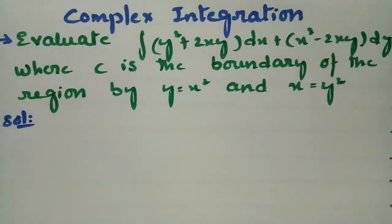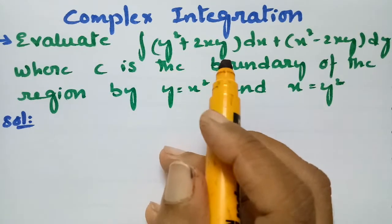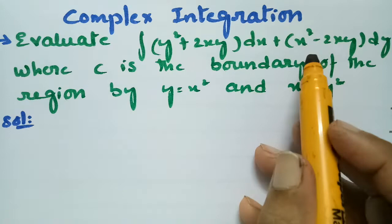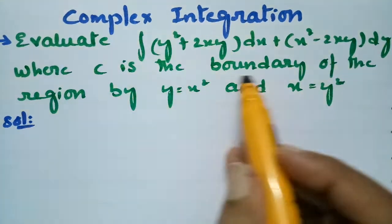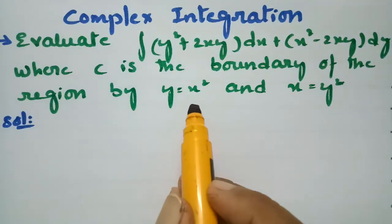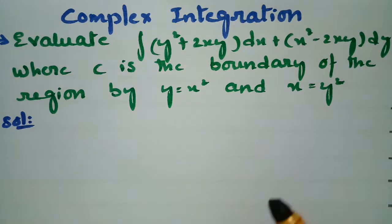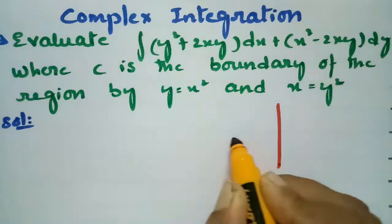In today's video I am going to give a solution for the most important problem from complex integration. We have to evaluate the integral of (y² + 2xy)dx + (x² − 2xy)dy, where C is the boundary of the region bounded by y = x² and x = y². Let me show you the figure.